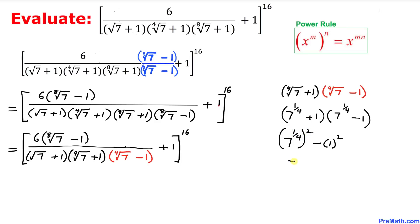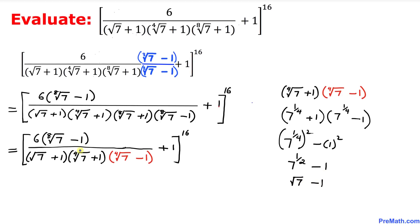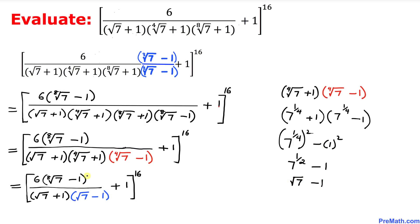Now we use the power rule and multiply out the nested exponents, giving us 7 to the power 1/2, minus 1. Converting to radical form, this becomes the square root of 7 minus 1. Thus these factors have been simplified to the square root of 7 minus 1.